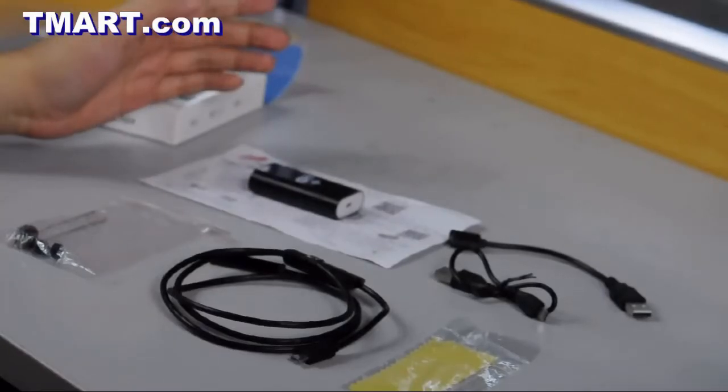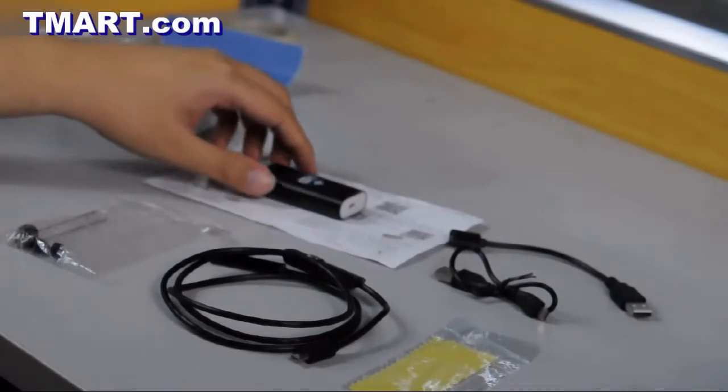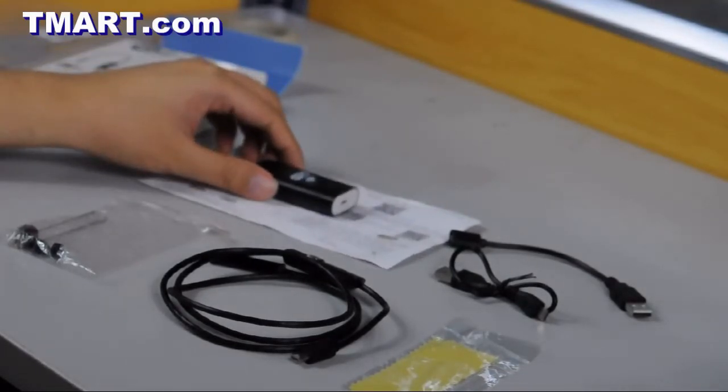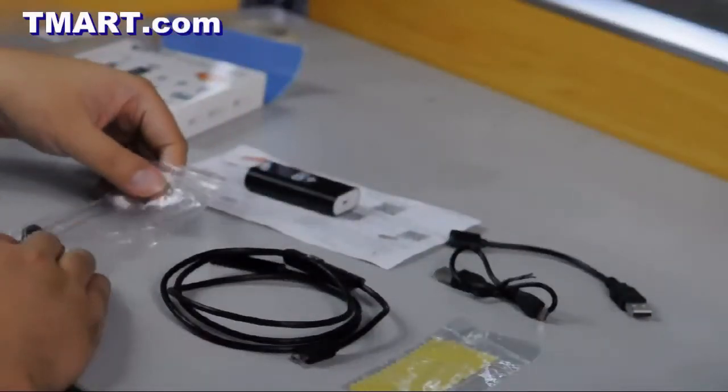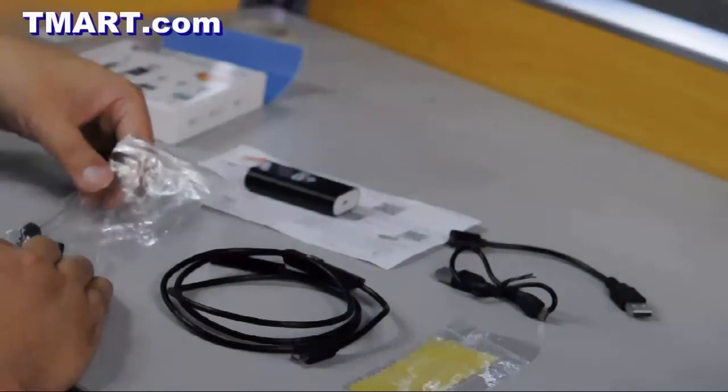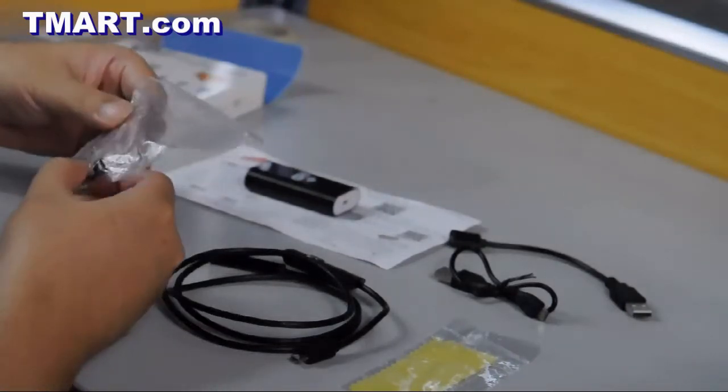So let's open this up and I'll show you the content inside. In this kit you get a quick start guide, a Wi-Fi box that sends out Wi-Fi signals and also provides power for the camera. And these are the three attachments that come with this kit. There's a hood, a mirror and a magnet.